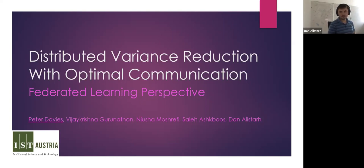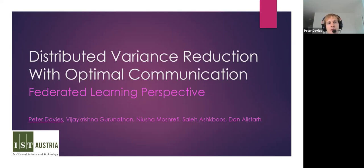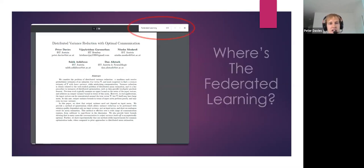So today he will talk about new methods for communication compression in the context of distributed optimization and in particular for federated learning. This is joint work with Vijay Krishna, Guru Nathan, Nisha Mosarefi, Saleh Ashgabhus, and Dan Alistar. I'm going to be giving this talk kind of backwards from my perspective, which hopefully will make it forwards from yours, because we didn't really come at this from federated learning. We came up with this as a means of reducing communication for gradient quantization in standard distributed stochastic gradient descent, but later realized it has applications — possibly better applications — to federated learning. That's why if you go look at our paper, you might notice it doesn't actually mention federated learning at all in its current form.